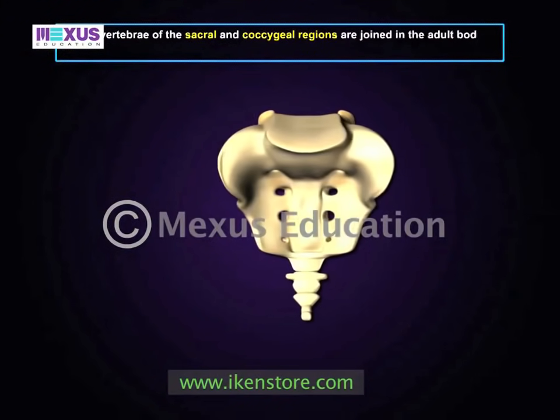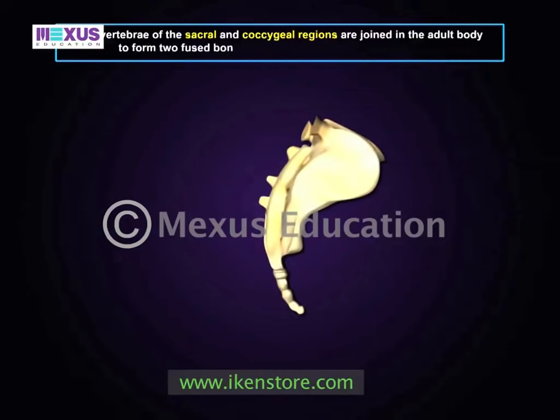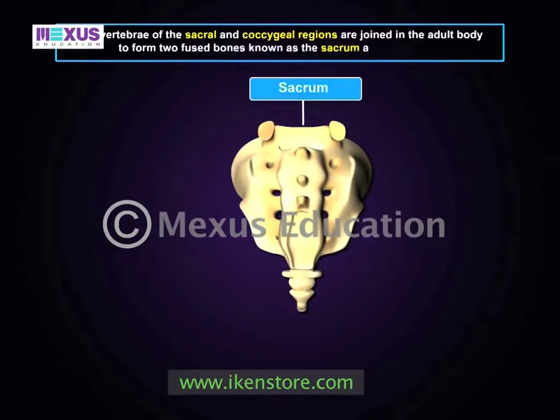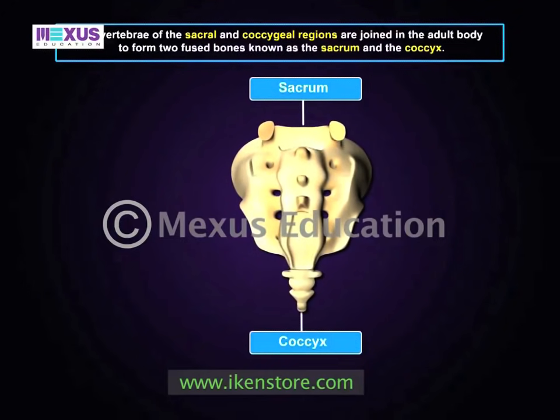The remaining regions are five sacral vertebrae and four coccygeal vertebrae. In the adult body, the sacral and coccygeal vertebrae are fused to form two bones known as the sacrum and the coccyx.